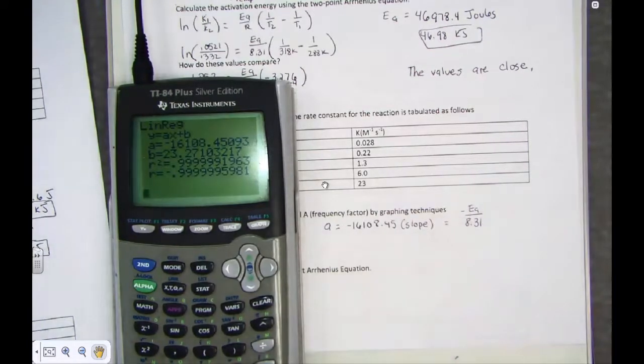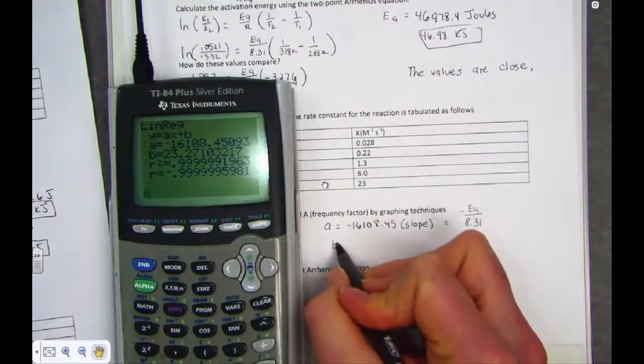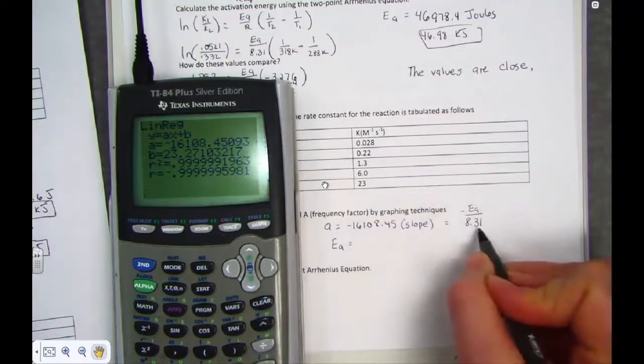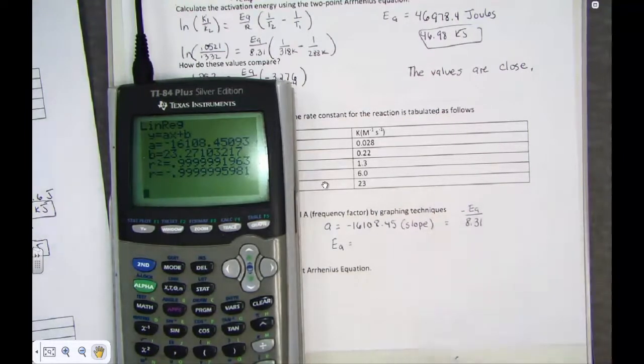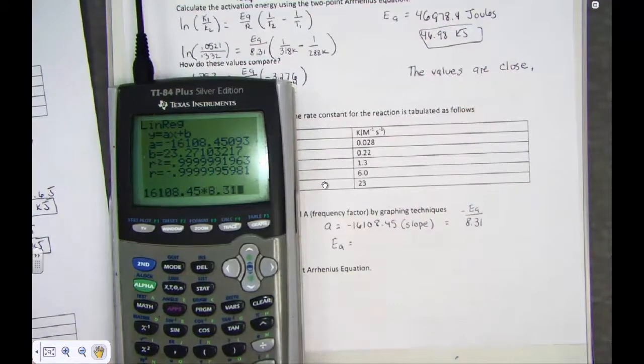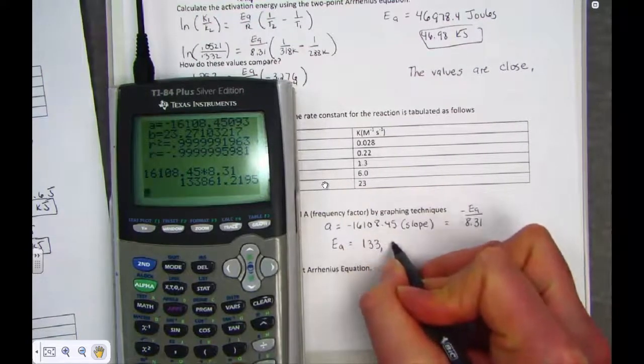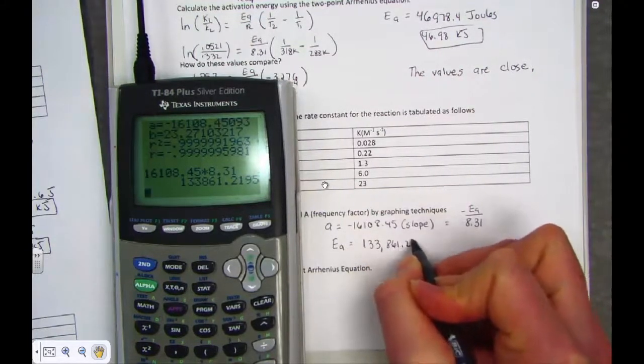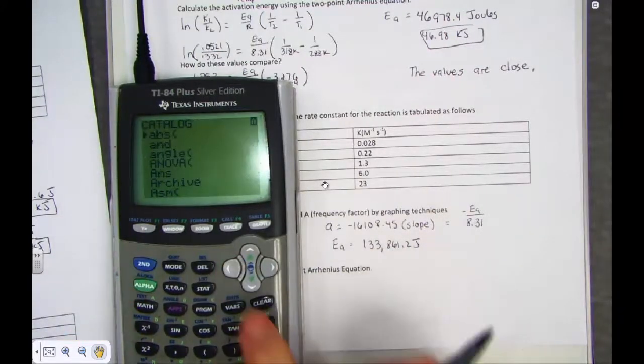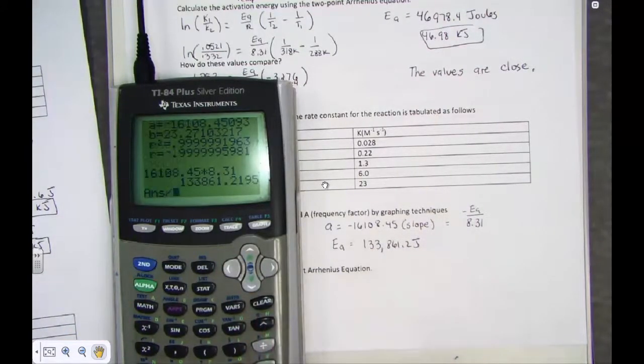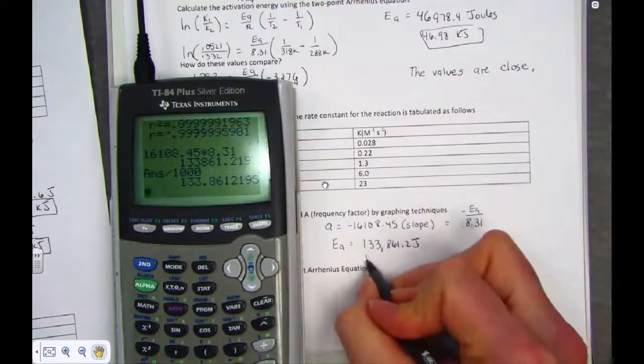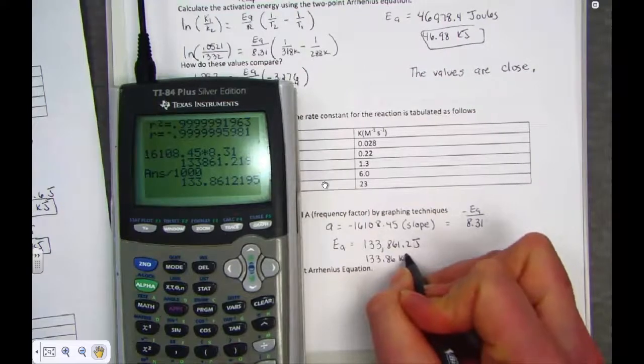So, to find activation energy, I type in the slope times 8.31 and knowing that activation energy will always be positive. 16,108.45 times 8.31 and we get a number. 133,861.2 joules or, if you prefer, 133.86 kilojoules.